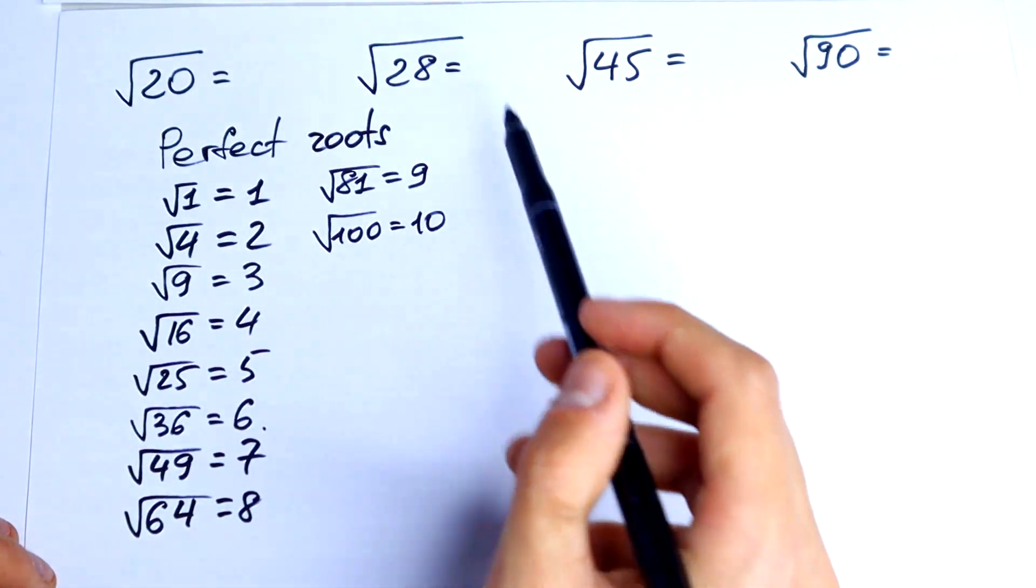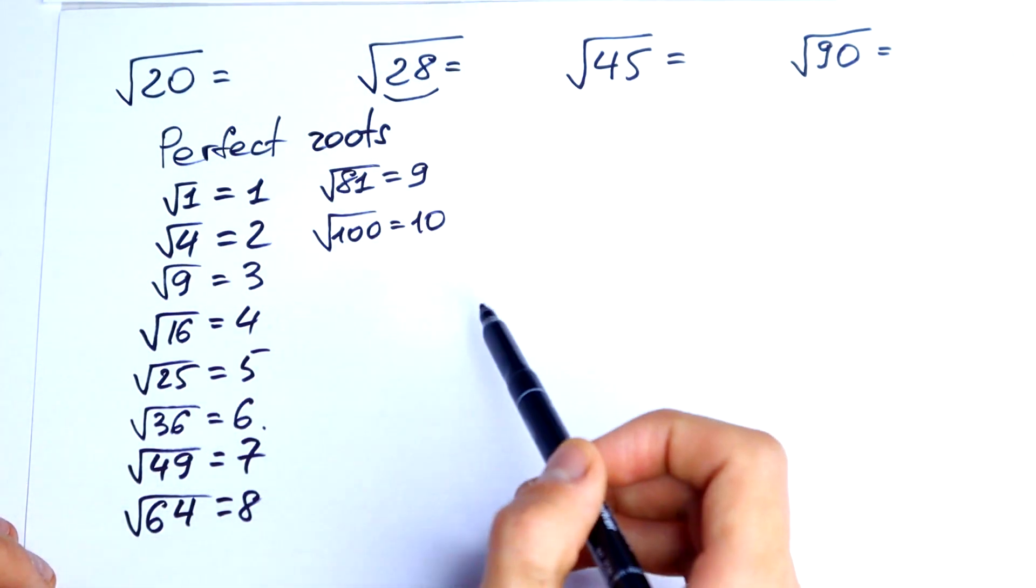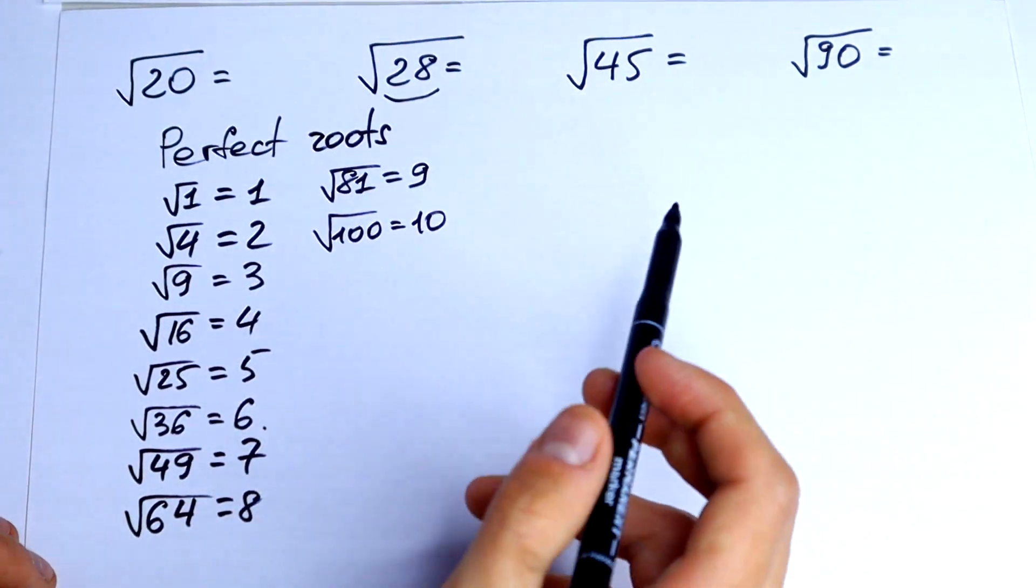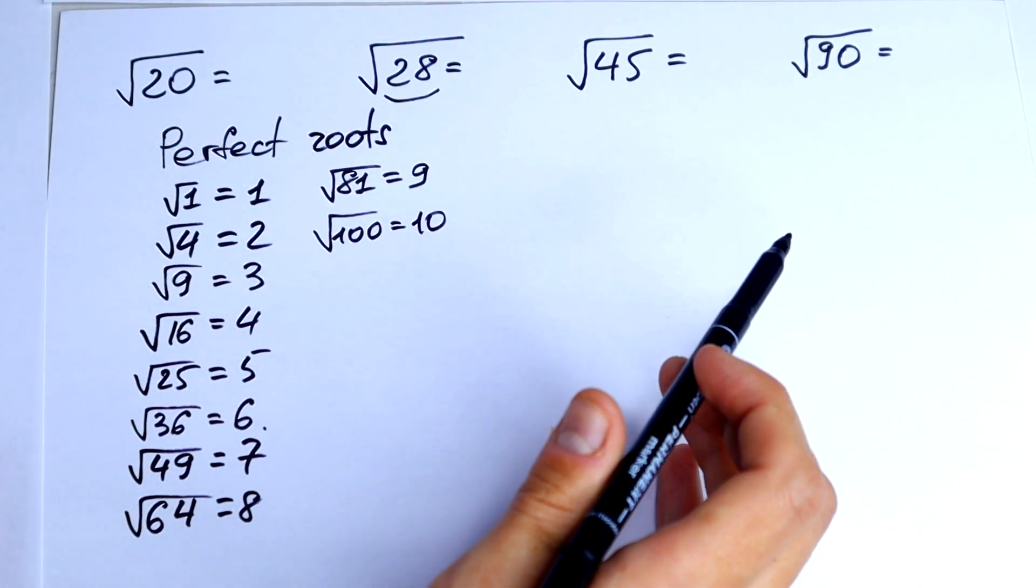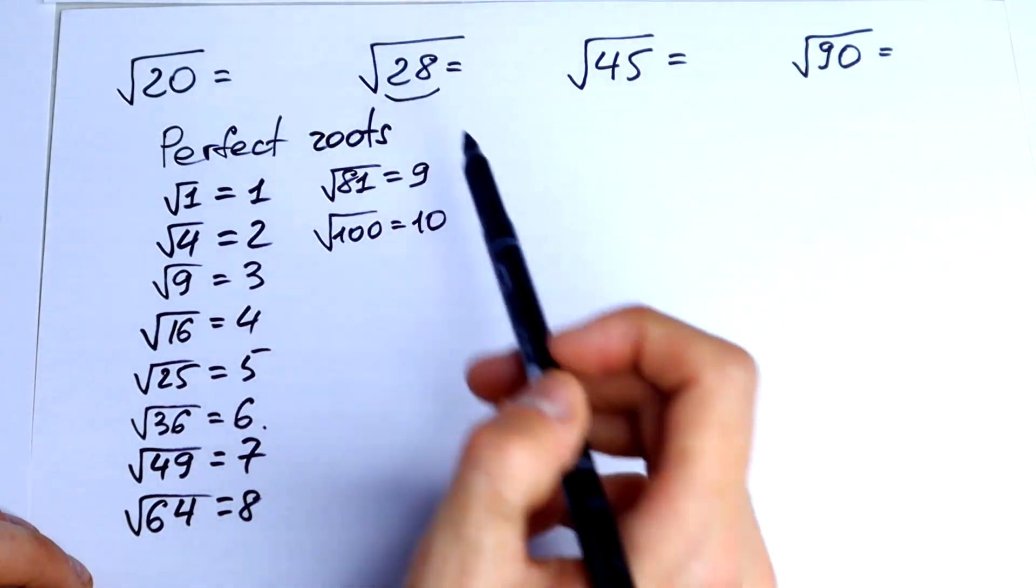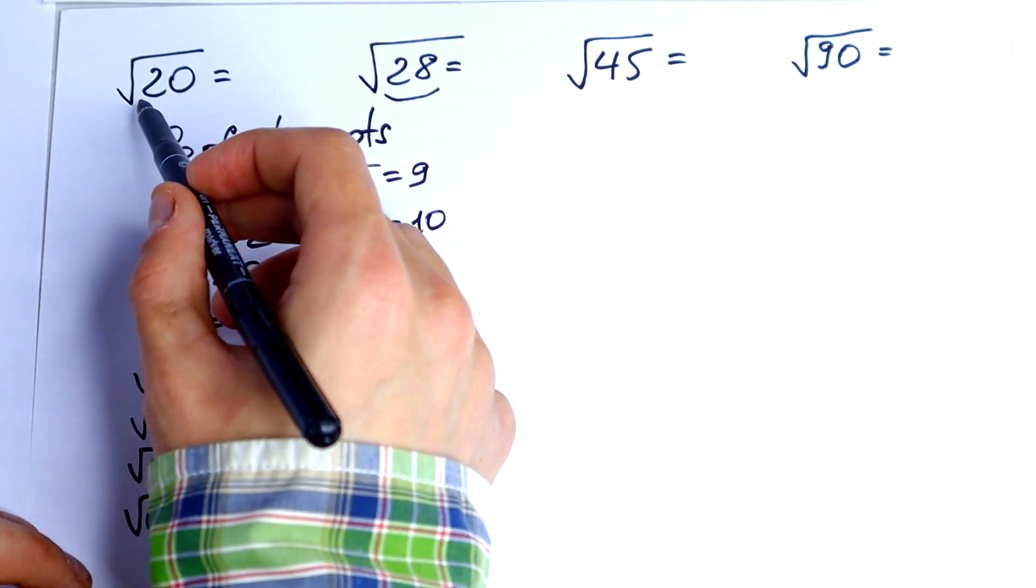The main idea to simplify this is to represent that number with perfect root and numbers that can be multiplied. For example,